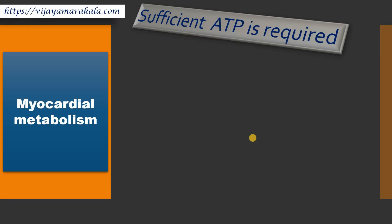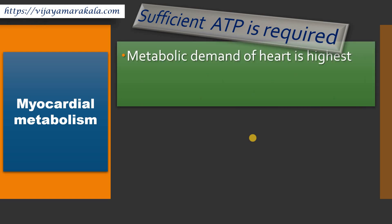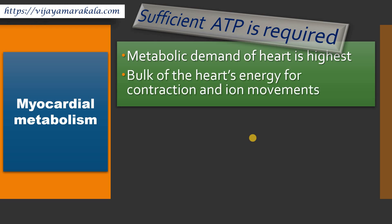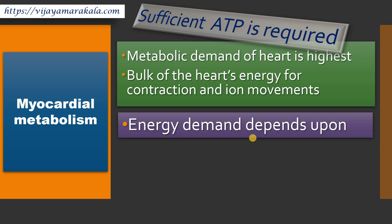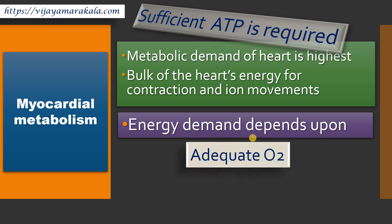As the heart is continuously beating, it requires a sufficient amount of ATP. ATP is the energy currency and the metabolic demand of the heart is highest because the bulk of ATP or energy is utilized for contraction of the heart and various movements of ions like active transport of ions across the cell membrane. This energy demand depends upon the availability of oxygen.